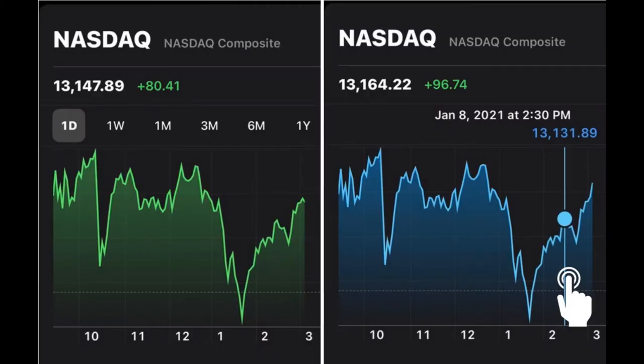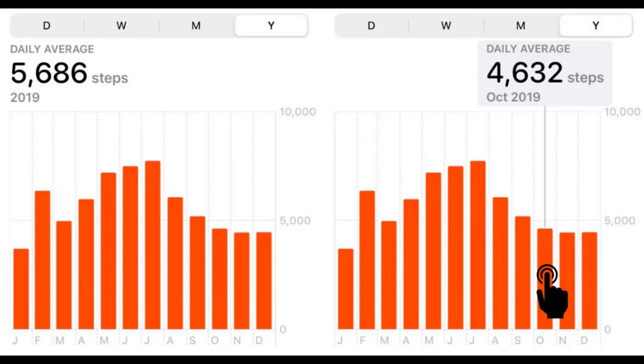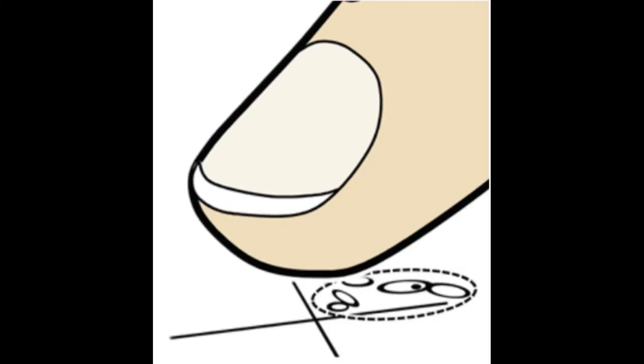Data visualizations are becoming more commonplace on smartphones and other mobile devices. People explore timelines of stocks and track their number of steps in health apps. But as we display more data on these 1D visualizations, it becomes increasingly difficult for users to reliably select items because tap selection is imprecise and the finger occludes part of the screen.